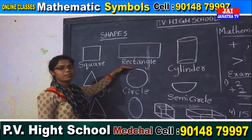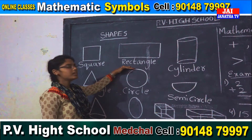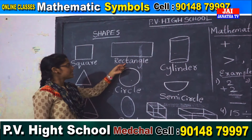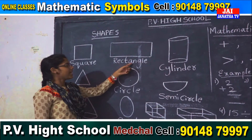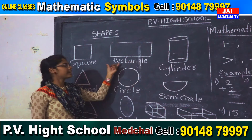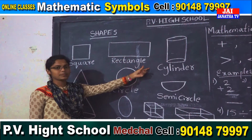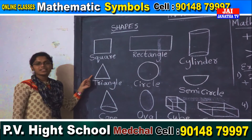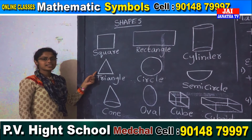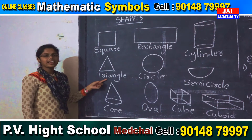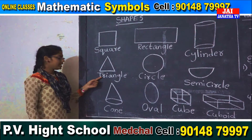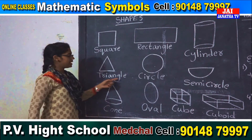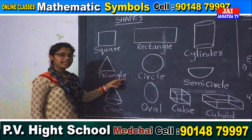And the second shape is rectangle. R-E-C-T-A-N-G-L-E. Rectangle. And what shape is this? This is a triangle. T-R-I-A-N-G-L-E. Triangle.